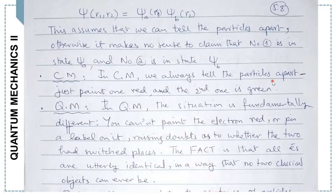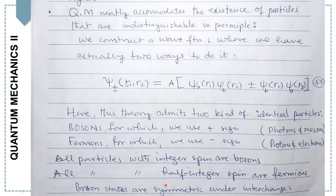Classically, yes, we can always tell particles apart simply by painting one particle red and the second one green. But if particles are small, then quantum mechanically the situation is fundamentally different. You can't paint the electron red, because it raises doubts as to whether the two had switched places. The fact is that all electrons are identical in a way that no two classical objects can ever be. Quantum mechanics accommodates the existence of particles that are indistinguishable in principle.